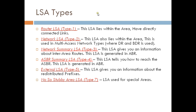Type 1 LSA gives you information about your directly connected links and it lies within the area. Type 2 LSA also lies within the area and it is used when you have a multi-access network — that is when you have DR and BDR election. In that case, the Network LSA will be used.